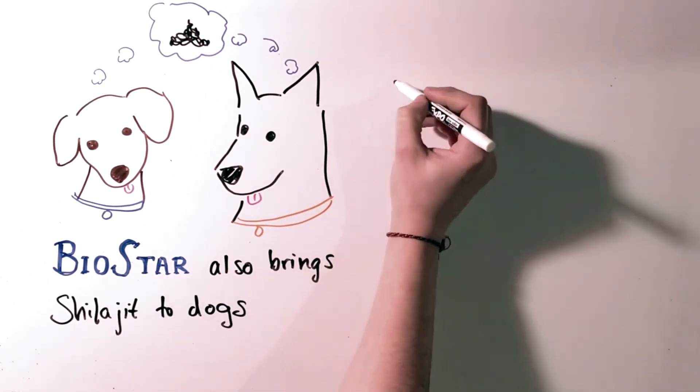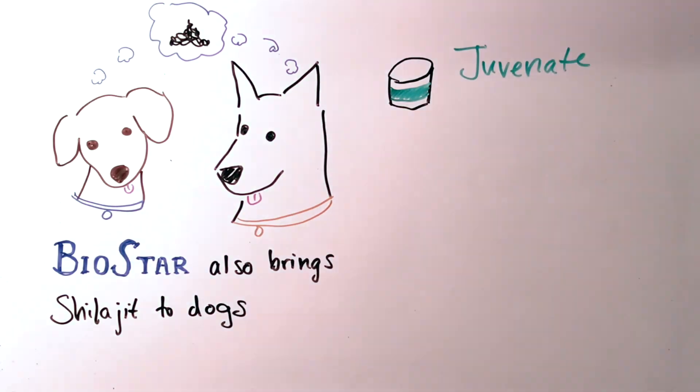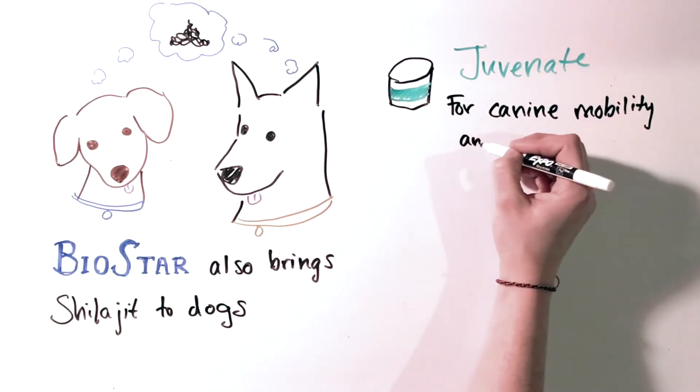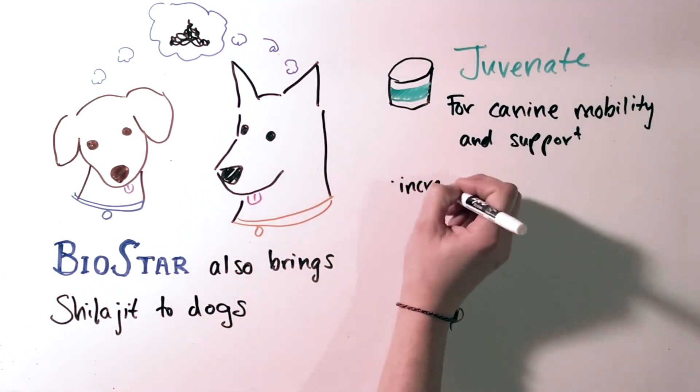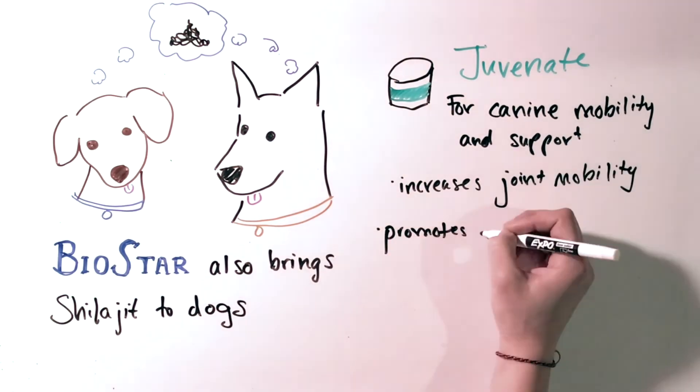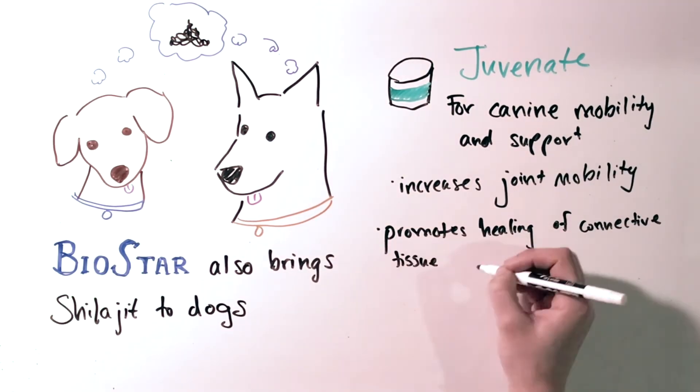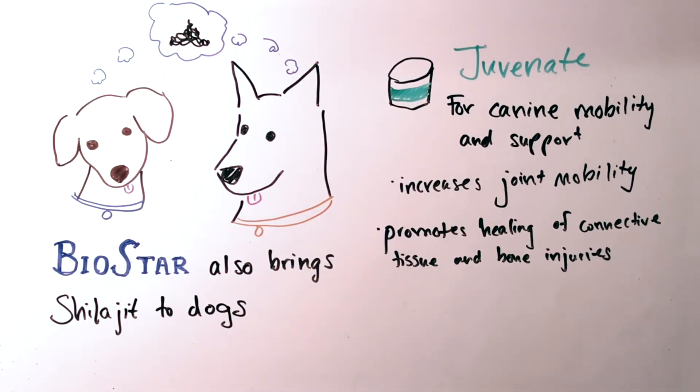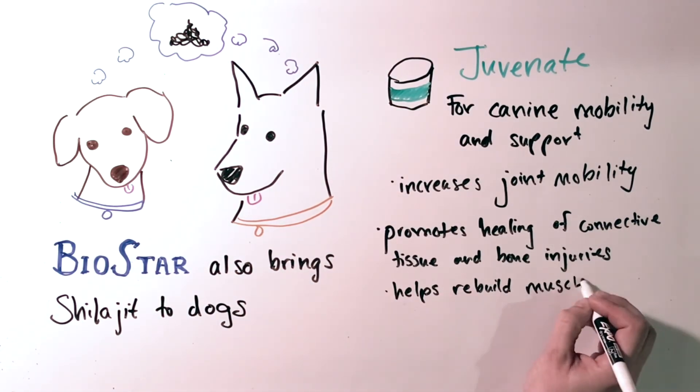We haven't forgotten about the dogs either. Biostar also provides shilajit for your dog in Juvenate for canine mobility and joint support. The shilajit in Juvenate increases joint mobility in dogs with arthritis, promotes healing of connective tissue and bone injuries, helps rebuild muscle mass and boosts overall energy.